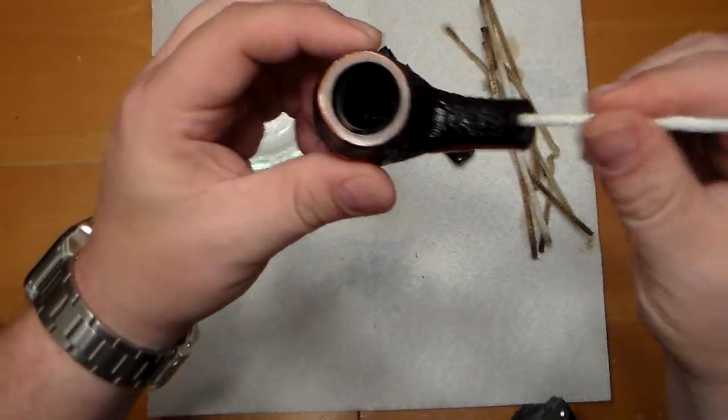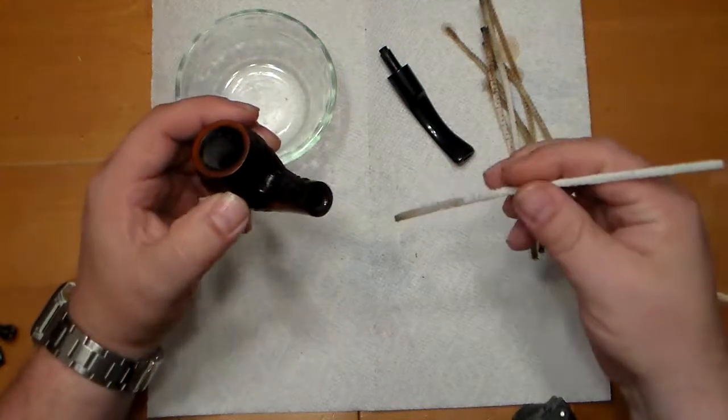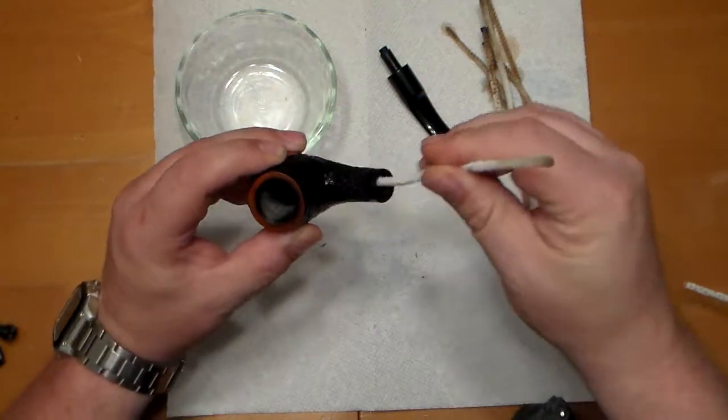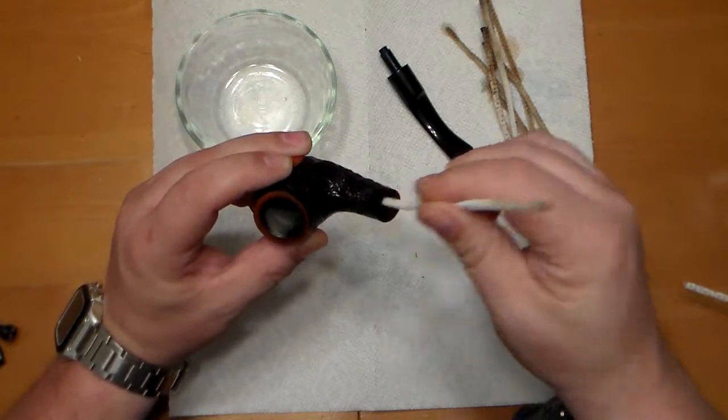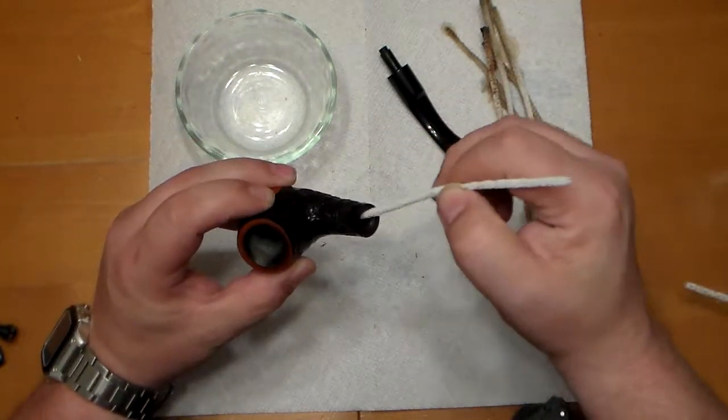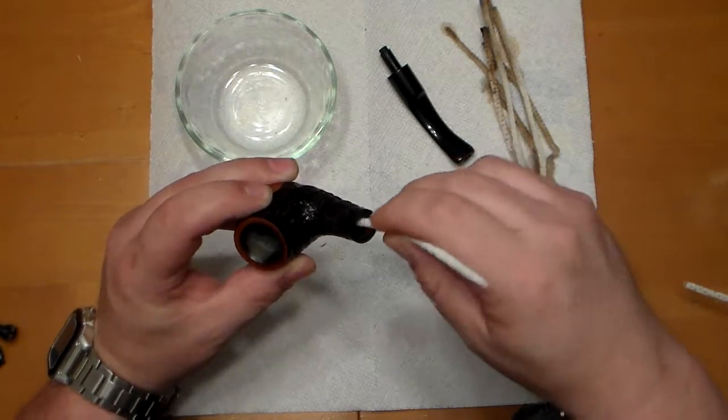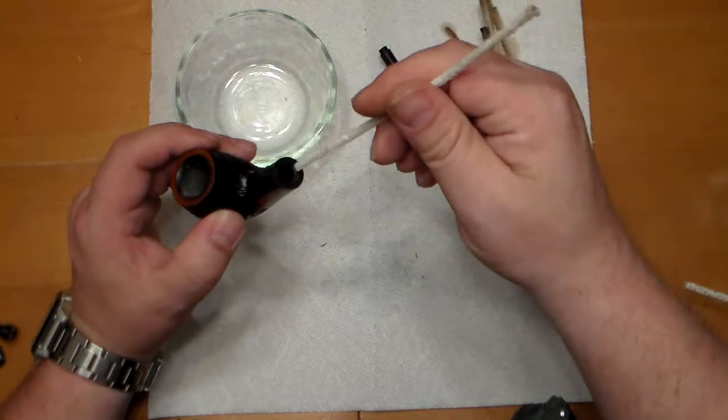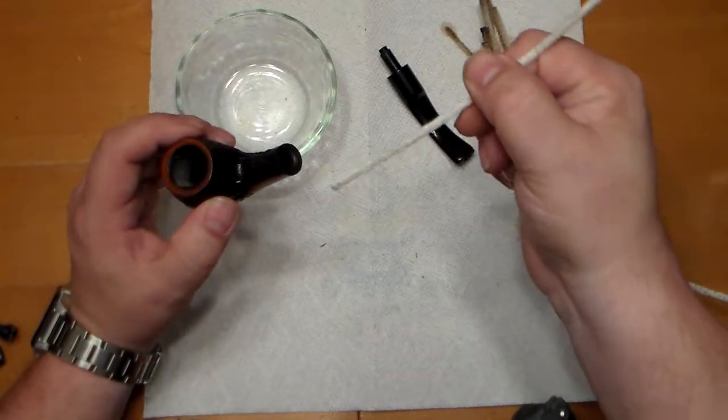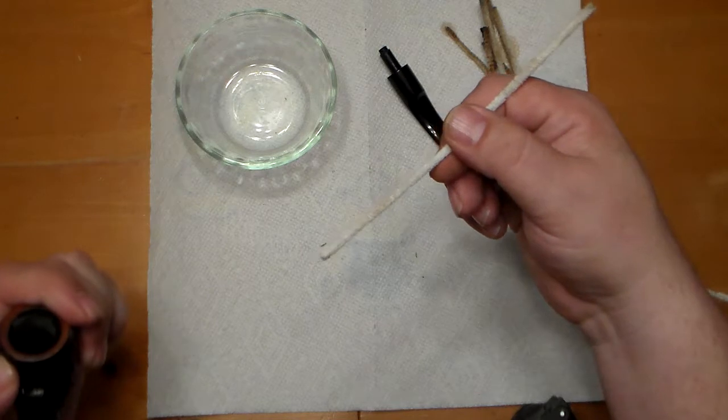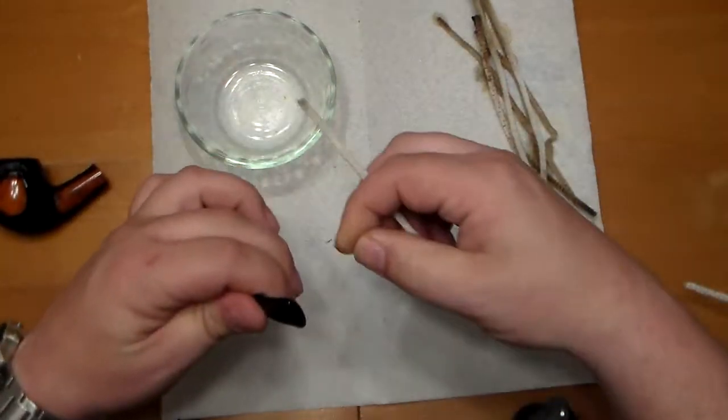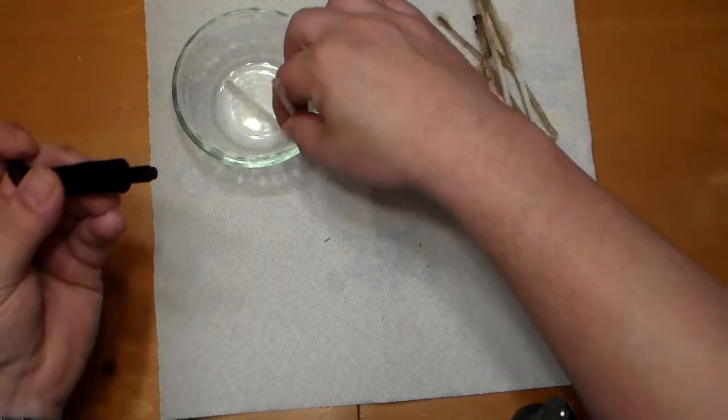You can see down in there where the pipe cleaner's coming out and getting all the way into the bottom of the bowl and everything. It doesn't take very long to get this done, and now you can see it's really pretty well cleaned out now. That part of it's clean. I'm going to go back to working on the stem and get it to that point where the pipe cleaners come out just as clean as they went in, and we'll put this pipe back into rotation.